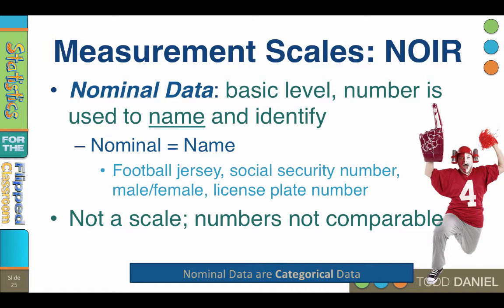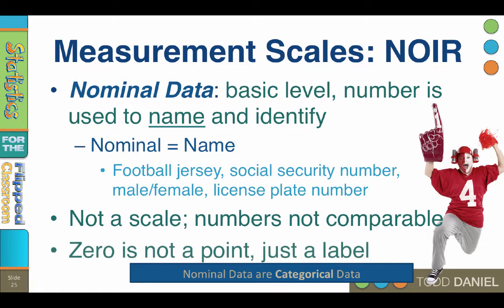Nominal numbers are not comparable. If I told you that this person belongs to political party number four, you would have no idea what I meant unless you knew the coding scheme that I was using. And because the numbers have no meaning outside of their specific context, the number zero may exist but it's still just a label — zero does not mean anything. Nominal data are categorical data.